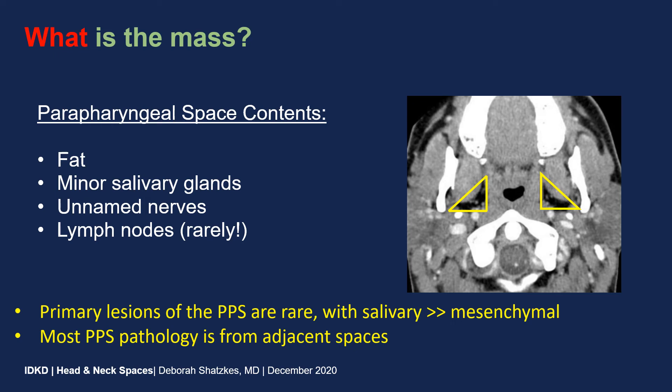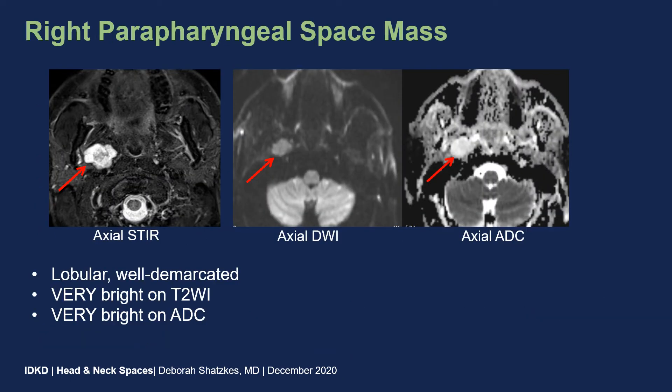Most parapharyngeal space pathology, in fact, comes from those adjacent spaces: the pharyngeal mucosal space medially, the parotid space posterolaterally, and the masticator space anterolaterally, to name a few. There's also some controversy about whether lymph nodes can be found in the parapharyngeal space, but that is quite rare and we really don't consider lymphadenopathy in the differential for a parapharyngeal space mass.